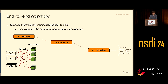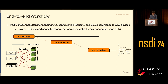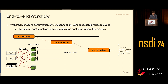When a user job comes in requesting a certain number of TPUs, Borg consults the network model and the existing fleet utilization and finds the appropriate cubes — say three cubes. It publishes those resource utilization requests, the pod manager subscribes to that, and sends OCS requests to the circuit switch devices. Each OCS device translates the request into detailed port-to-port cross-connect actions. The cubes get cross-connected in the shape the user wants. After that's done, an approval signal goes to the scheduler, which allocates job binaries to those cubes.